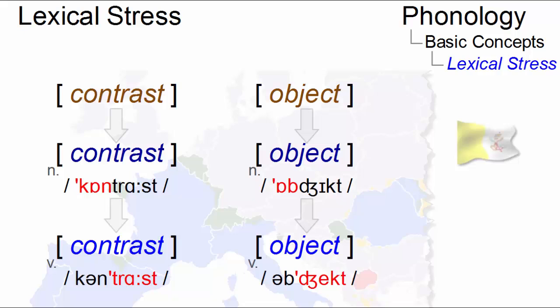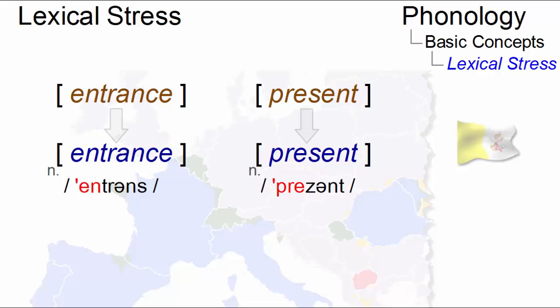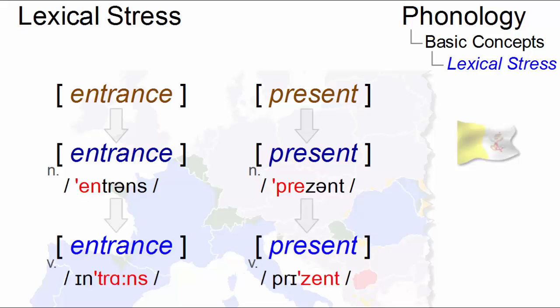Note that the segmental structure changes too. The vowel of the unstressed syllable in the verbs becomes the mid-central vowel schwa. In cases such as 'entrance' and 'present,' these segmental differences are more obvious when stress shifts to the second syllable and turns these nouns into verbs, as in 'entrance' and 'present.'